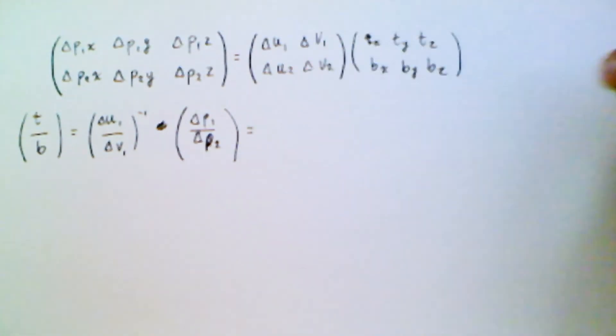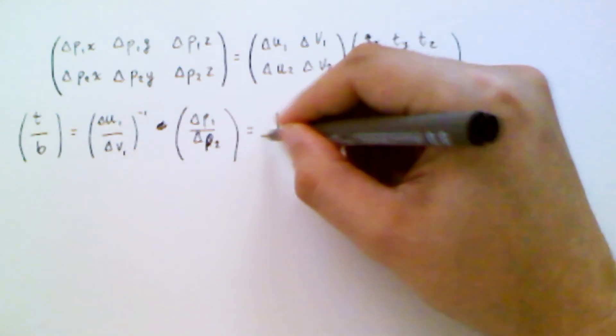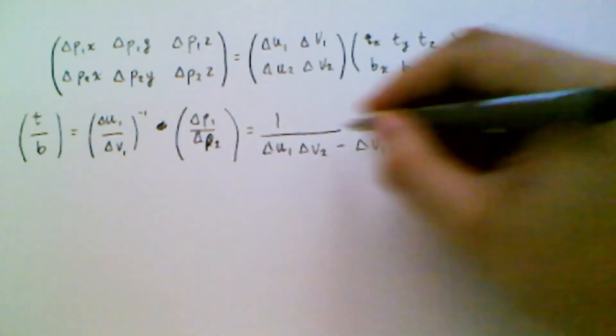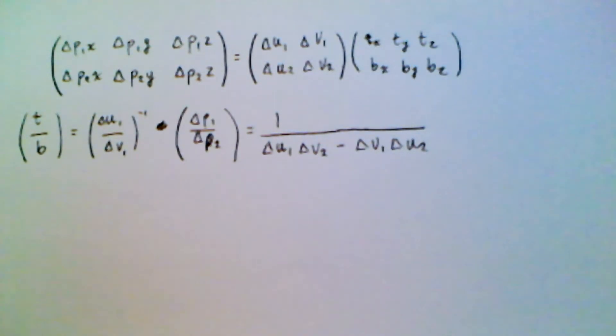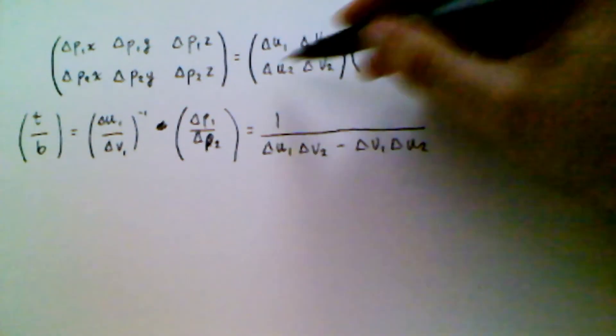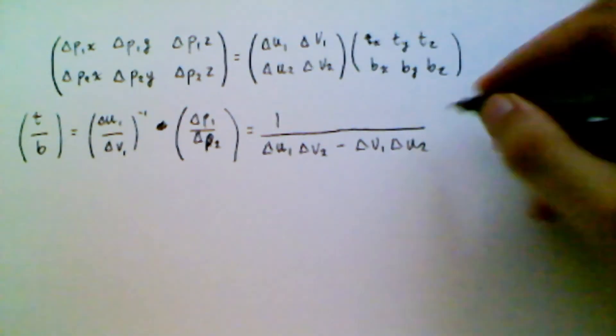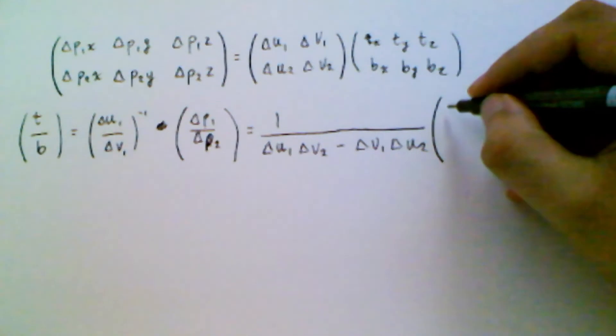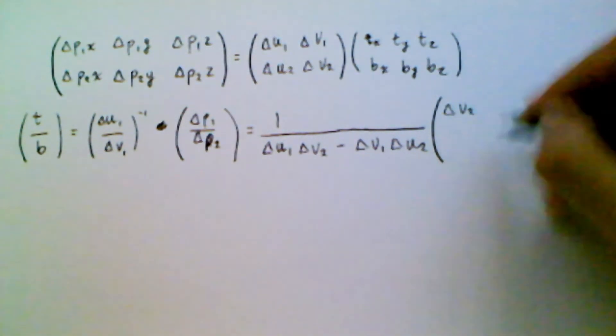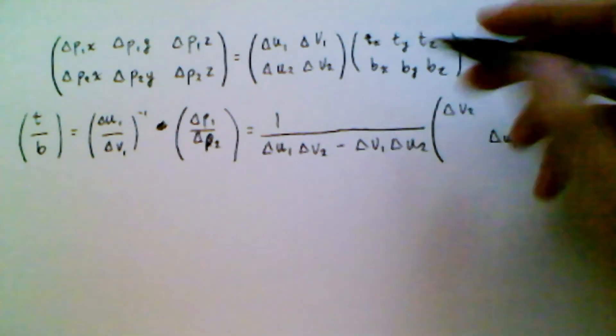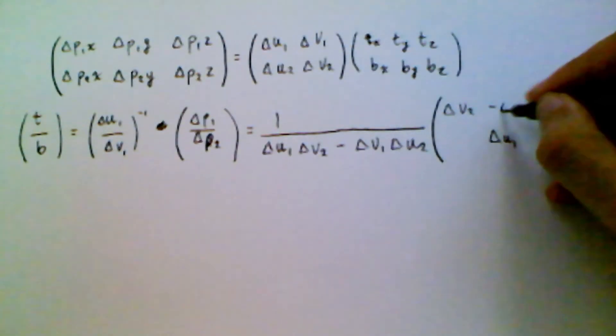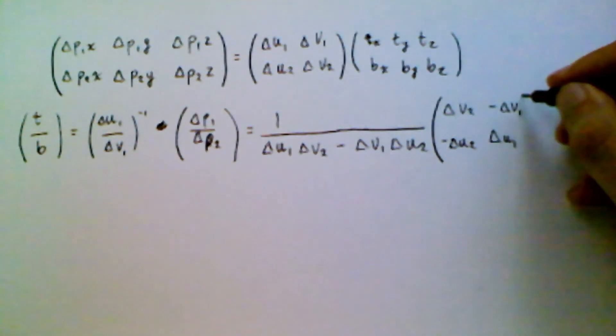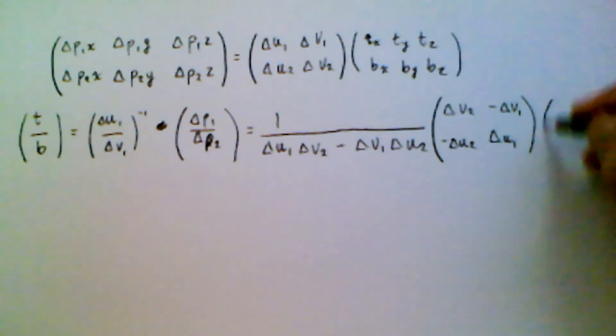So we know how to take the inverse of a two by two, we divide by the determinant, which is that expression there, just going on diagonal minus the off diagonal, and then we swap the diagonal entries on the on diagonal, and we negate the off diagonal entries.